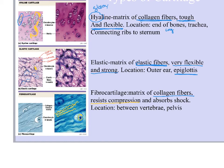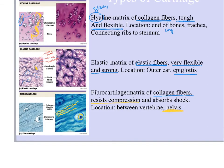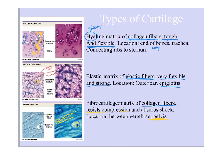You find fibrocartilage pads — what you might call discs — between the vertebrae of your back. Those are the little pads between the hard vertebrae. You also find a piece of fibrocartilage anchoring the right side of your pelvis to the left side anteriorly, in the front of your pelvis, holding the two sides of your pelvis together. That's something I'll revisit when we get to the skeletal system. So there you have it: the three types of cartilage, their structures, functions, and locations.